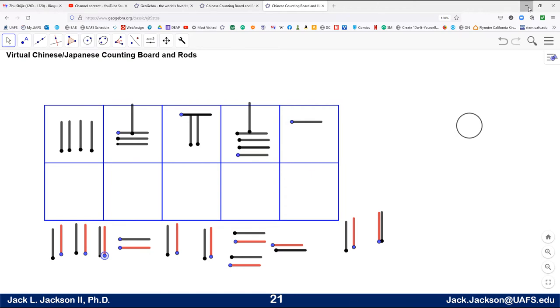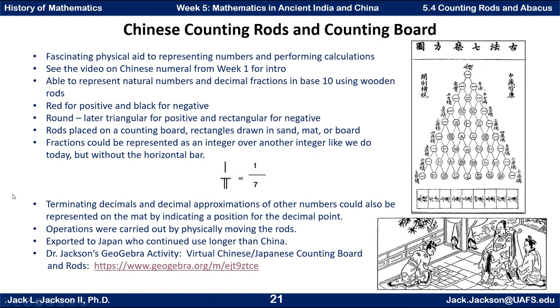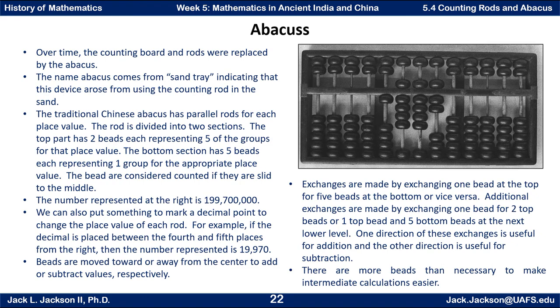Okay, going back to our slideshow. The next thing that we have is we talk about the abacus. Now, the abacus actually replaced and came from the counting boards and the rods. They were replaced by the abacus. And one of the things that kind of indicates that may be the case is the word abacus comes basically from sand tray, indicating that this device arose from using the counting rods in the sand, using instead of a board, actually just drawing your little frame in the sand or the dust. It could be dust tray or sand tray. So of course, there's no dust or sand in the actual abacus.